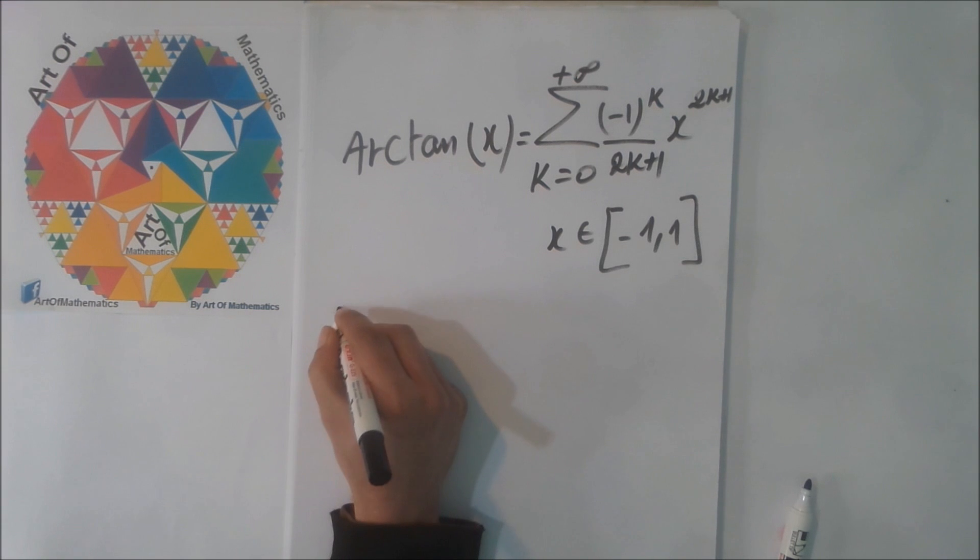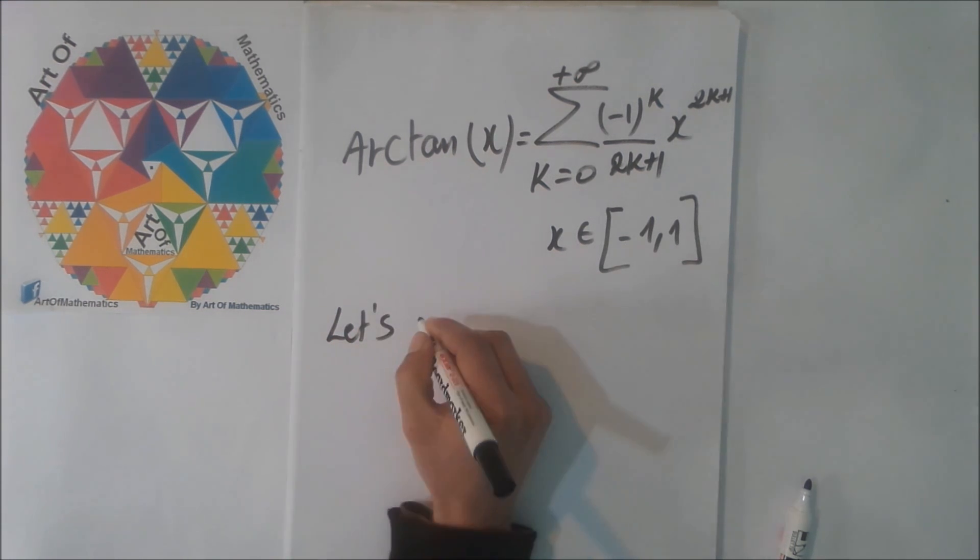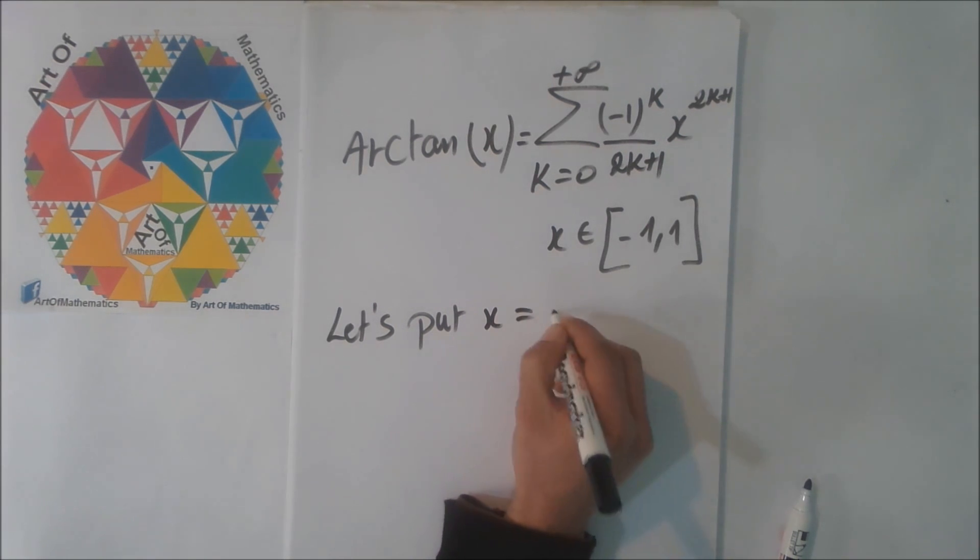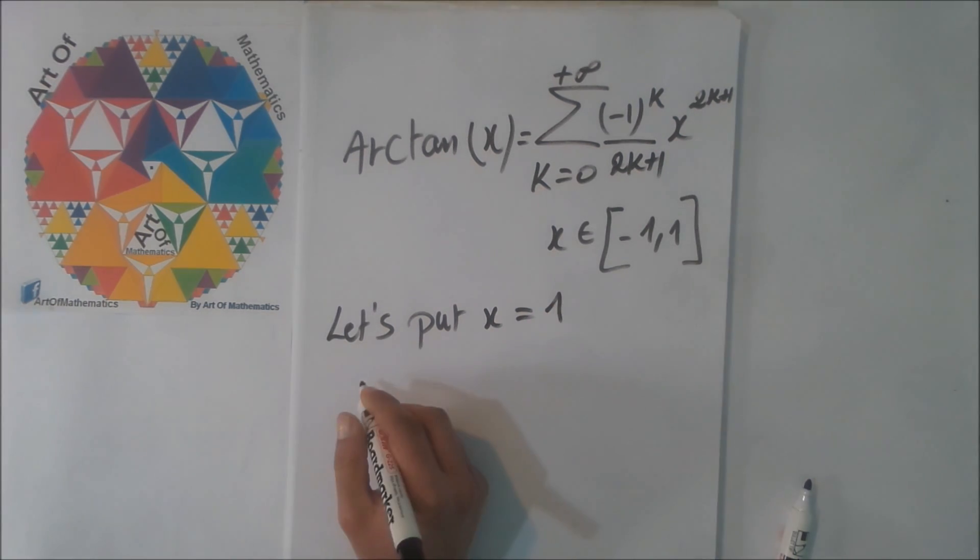So now let's put x equal to 1. So we get arctangent of 1.